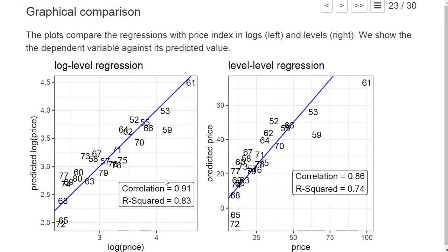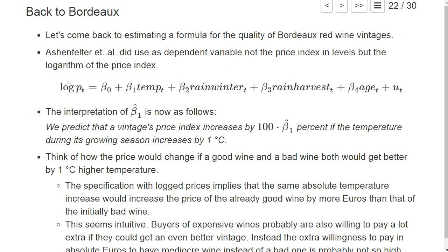But one cannot only make theoretical arguments, one can also look at the data and look at which model better fits the observed prices. So where do we have the better predictions? And here I basically plotted for this log-level regression, so where the prices have logged and all the other independent variables are not logged, on the x-axis, the logarithm of the actual price and on the y-axis, the predicted price. So this is the prediction of the logarithm price using our estimated coefficients beta 0 hat, beta 1 hat, and setting a 0 for the error.